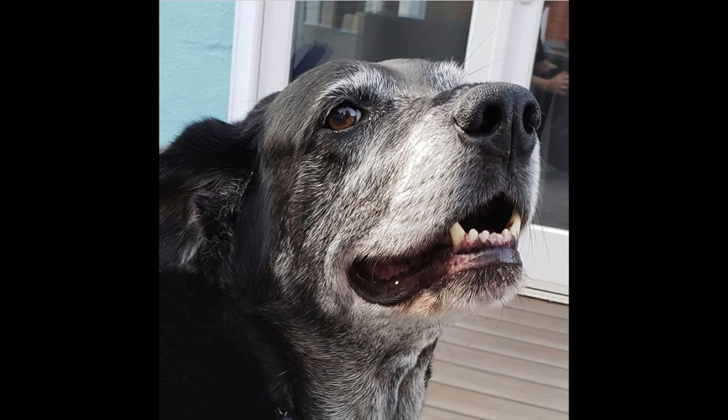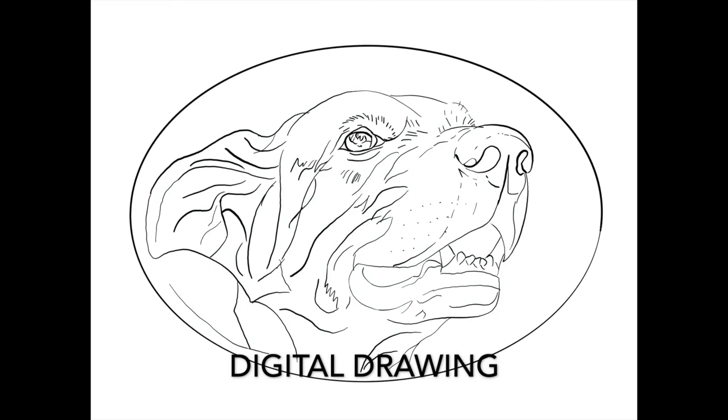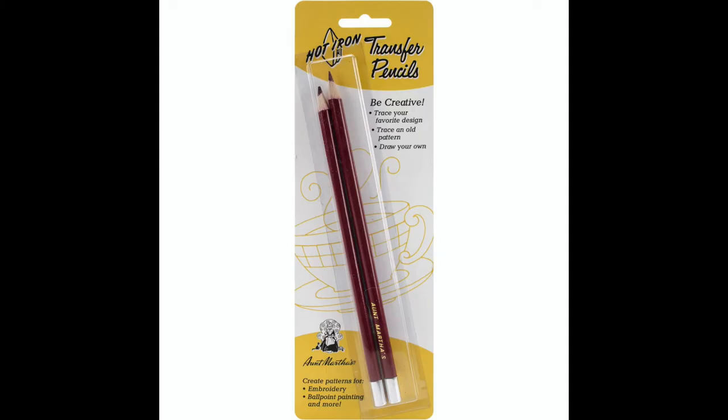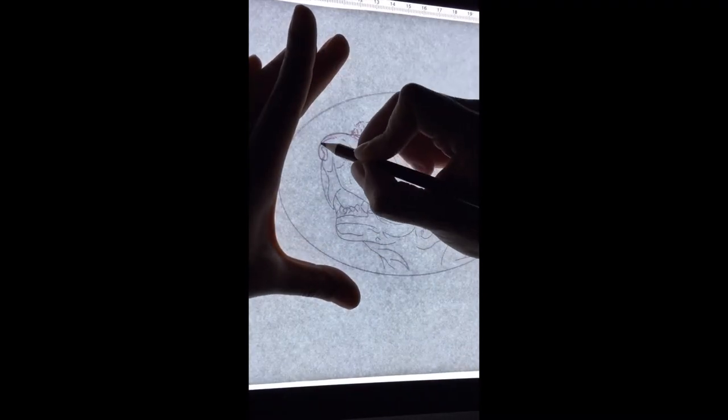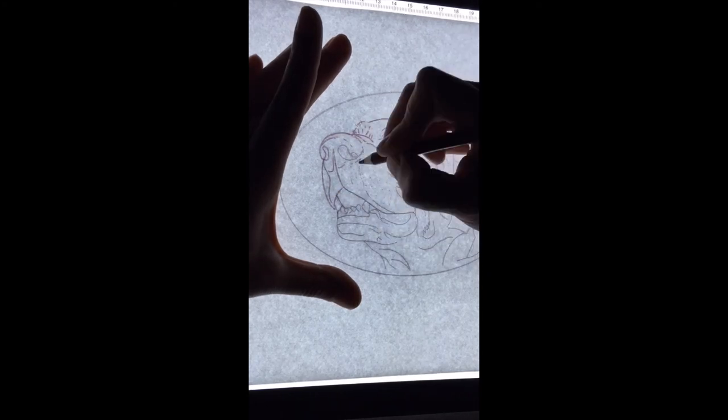When I was done with the drawing I printed it out and I like to use Aunt Martha's hot iron transfer pencils. I trace the drawing using the Aunt Martha's transfer pencil and using a lightboard. I just draw all of the lines.